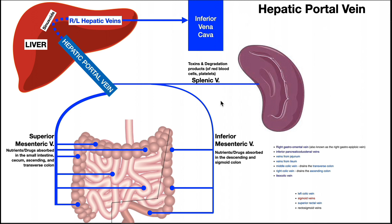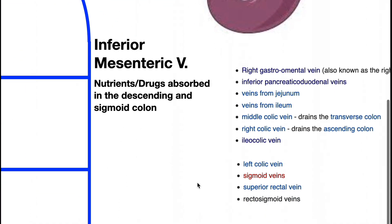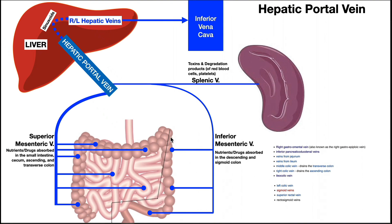Then we have the inferior mesenteric vein, which is mainly responsible for draining nutrients, drugs, and other substances from the descending and sigmoid colon. Its tributaries include the left colic vein, which drains the descending colon; the sigmoid veins, which drain the sigmoid colon; the superior rectal vein, which drains the upper part of the rectum; and the rectosigmoid veins, which drain the area where the sigmoid colon becomes the rectum. Anything absorbed from those regions drains into the inferior mesenteric vein.